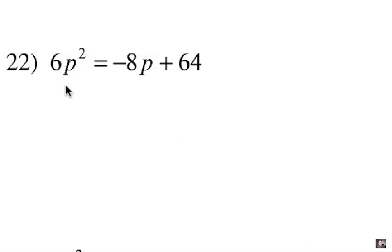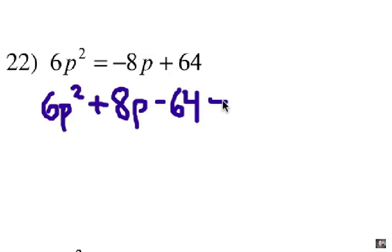Alright, number 22. Again, notice it's not in standard form. So when I move everything to the left side, now be careful about the sign changes here. Your standard form of this equation is 6p squared plus 8p minus 64 equals 0. This tells you that A must be positive 6, B must be positive 8, and C must be negative 64. Let's plug it in the quadratic formula.